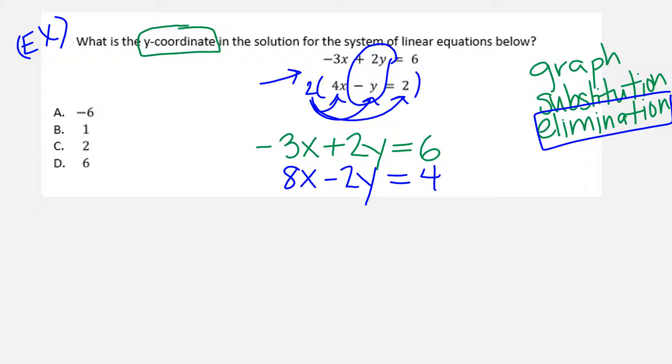Our goal is to eliminate a variable. We add them to combine. You have positive 2Y and negative 2Y, so those cancel. Negative 3 plus 8 is 5X, and 6 plus 4 is 10. Notice the question asks for the y-coordinate and we just eliminated it, so we might be giving ourselves a little more work. This is 5 times X, so we divide. This gives us 10 divided by 5, which is 2.